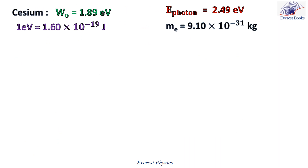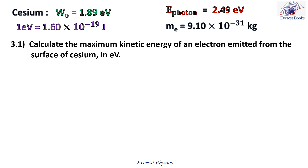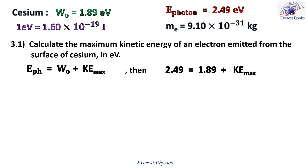Part 3.1: calculate the maximum kinetic energy of an electron emitted from the surface of cesium in electron volts. Using Einstein's photoelectric equation, the energy of the photon equals the work function of the metal plus the maximum kinetic energy of the emitted electron. Replacing the energy of the photon by 2.49 eV and the work function by 1.89 eV, the maximum kinetic energy of the emitted electron is 0.600 electron volts.